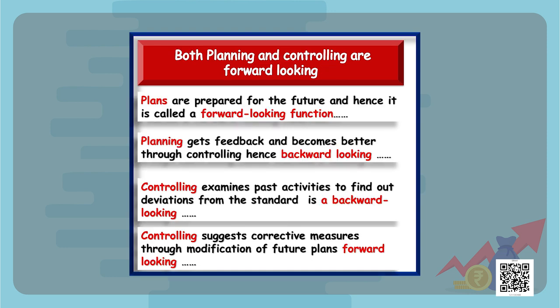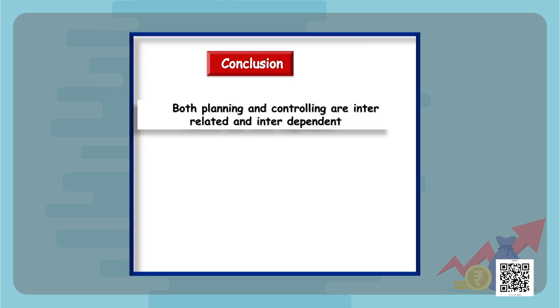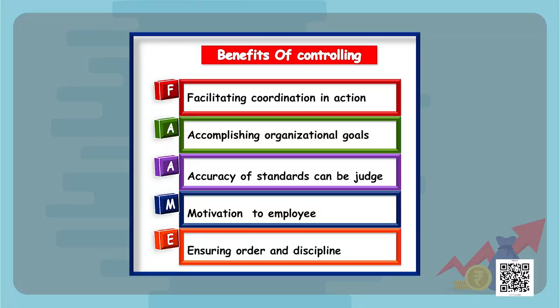Planning and controlling are both forward looking and backward looking functions. Plans are prepared for the future, making planning a forward looking function, whereas planning also gets feedback and becomes better day by day, making it backward looking. Controlling examines past activities to find deviations from standards — making it a backward looking function — and suggests corrective measures through modification of future plans, making it forward looking as well.